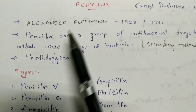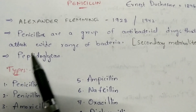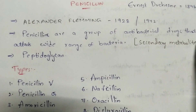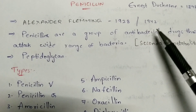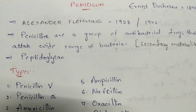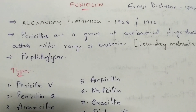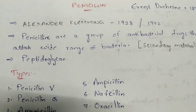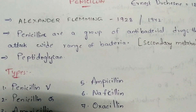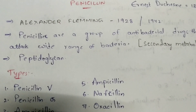What is penicillin? Penicillin is a group of antibacterial drugs that attack a wide range of bacteria. These penicillins are called secondary metabolites — antibacterial drugs are also commonly referred to as antibiotics. Normally, when an infected bacterium enters your body, this type of antibiotic gets injected into your body, and penicillin kills those bacteria. How penicillin kills the bacteria, we will see later in this video.